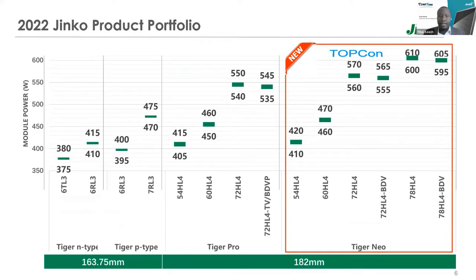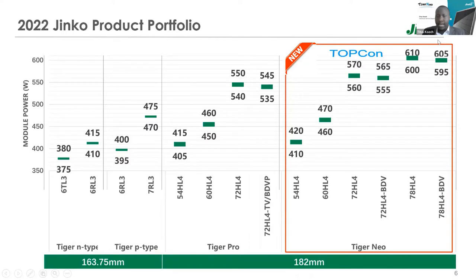Our core business is PV module manufacturing, and we also have other business lines including an energy storage division, a water pumping division, and a lighting division. In our solar PV module portfolio this year, we have three series: the Tiga series, the Tiga Pro series, and the Tigan series. Tigan is a new module type we launched this year that is changing the discussion in the industry. Our portfolio is quite diverse — modules ranging from 375 Wp all the way up to 610 Wp, for both N-type and P-type.